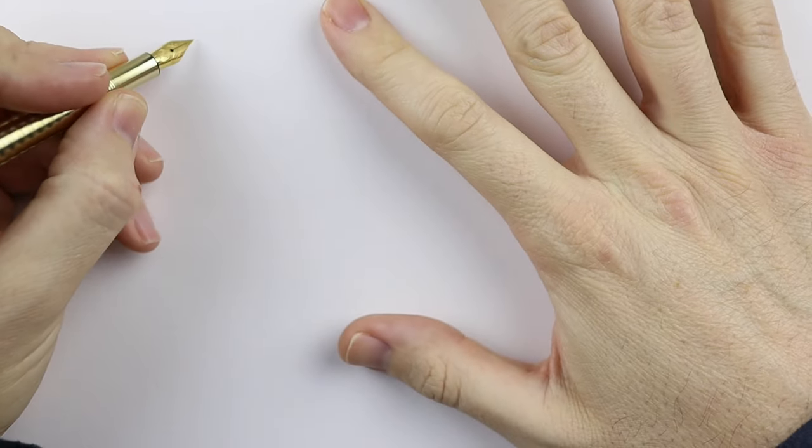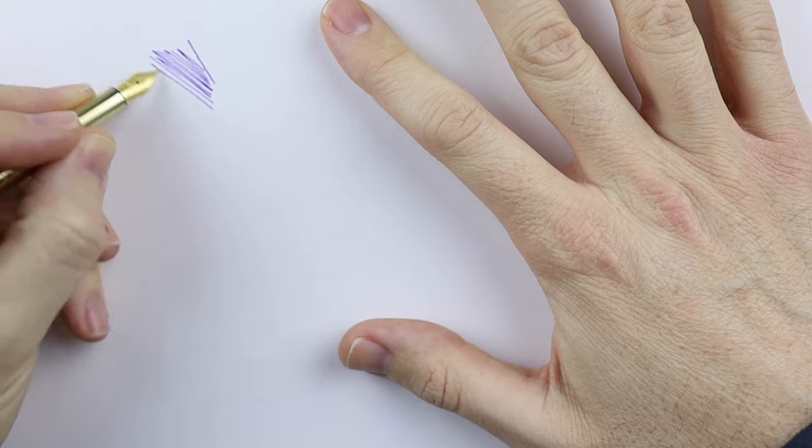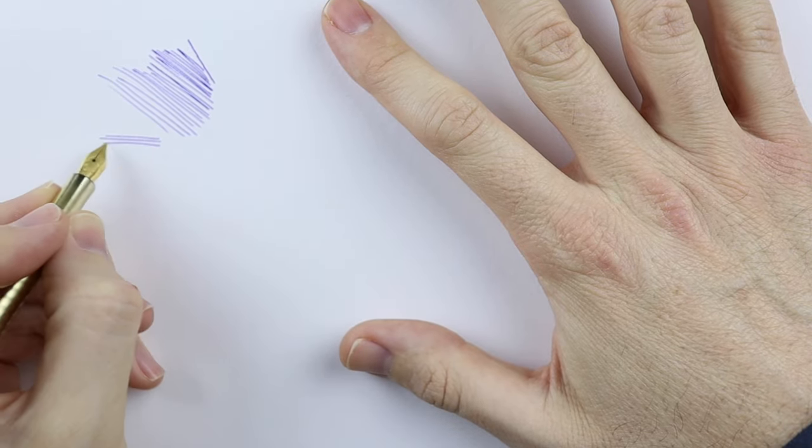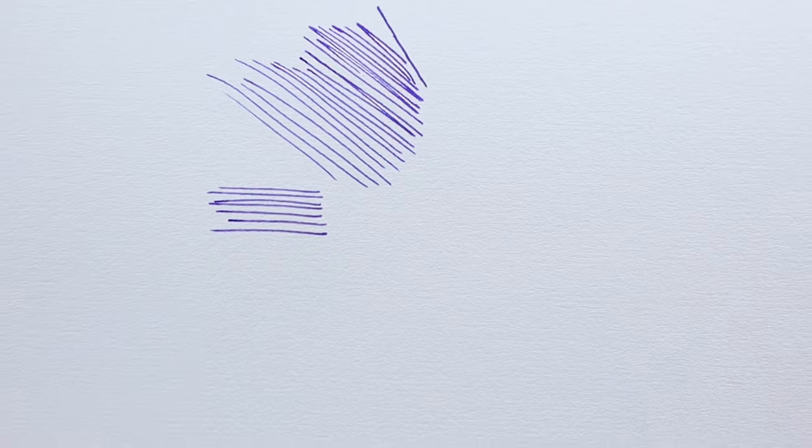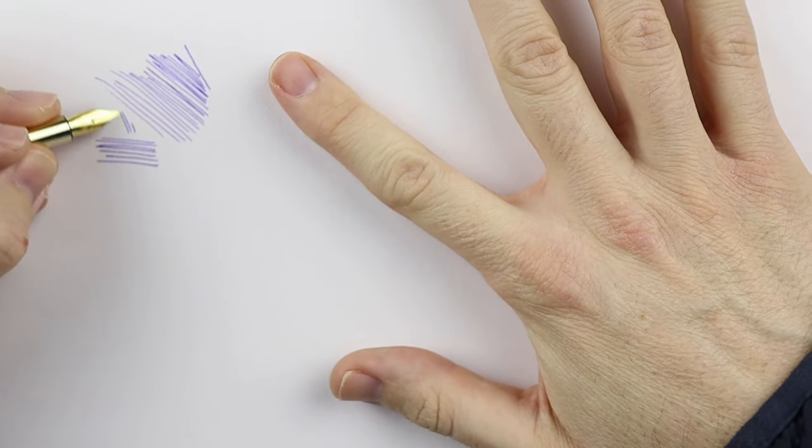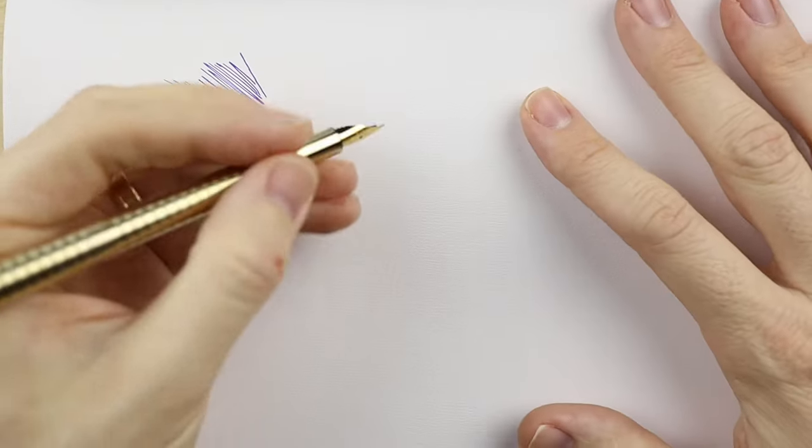Alright. So here we go with some line testing. It seems to be smooth and flow well. The forward writing is what I would expect an extra fine to be. Typical Western extra fine would be something like if you had a Platinum or a Pilot, what their fine looks like. The Pilot Metropolitan comes in fine is most likely what you'll get.